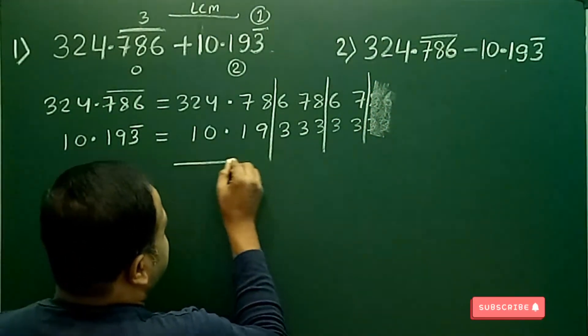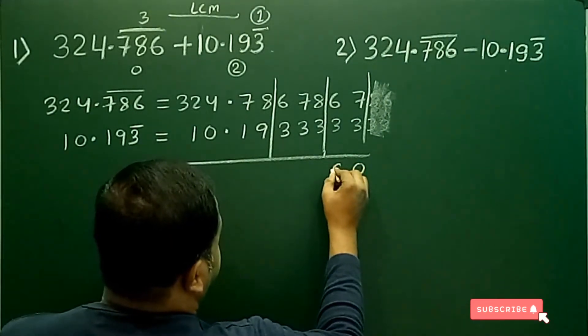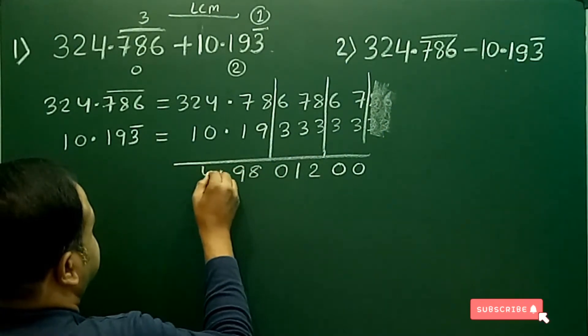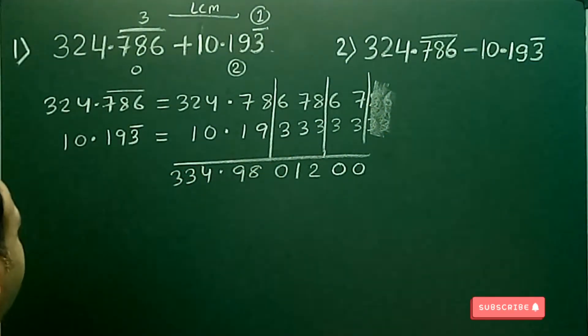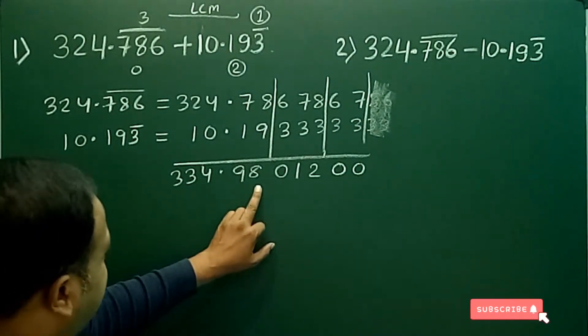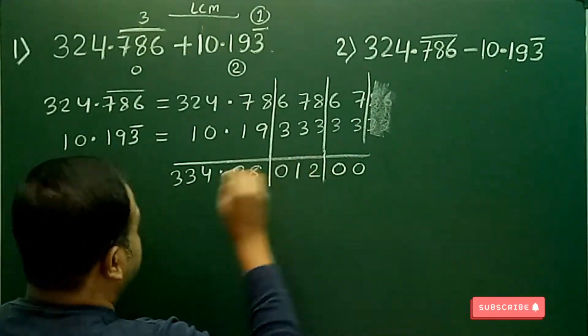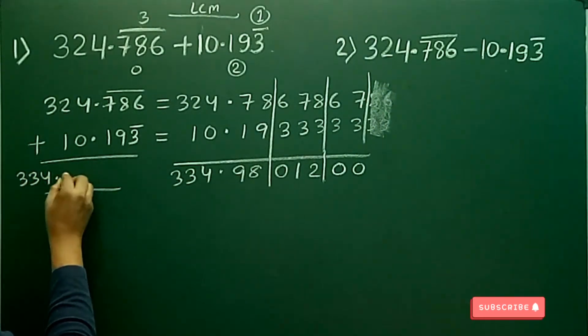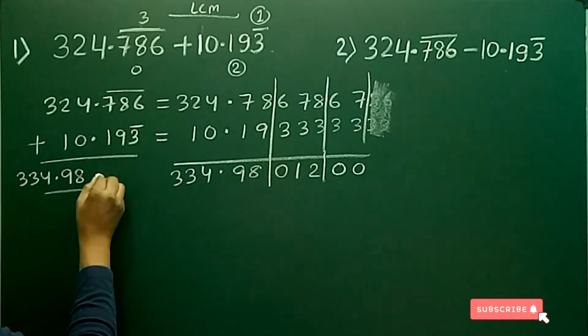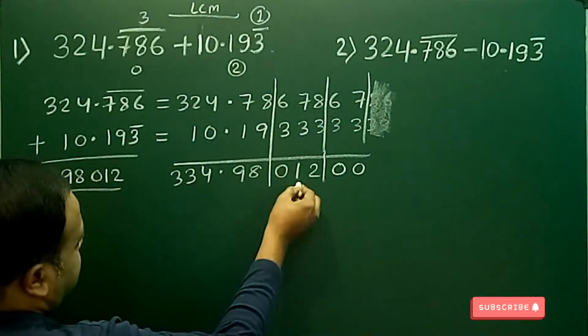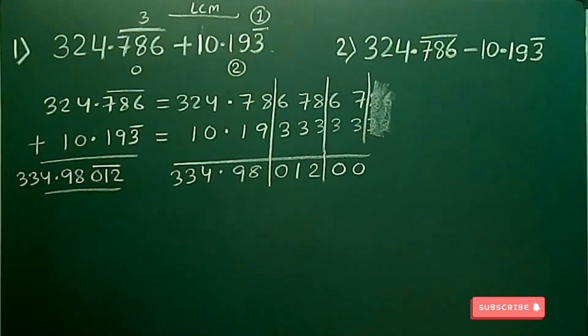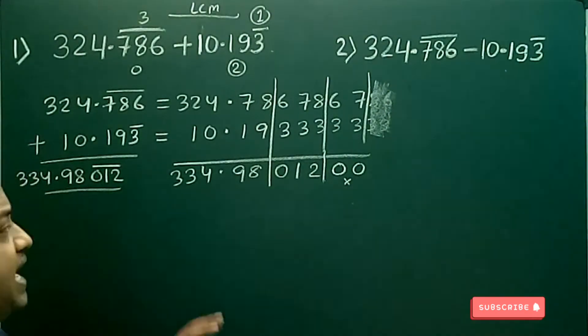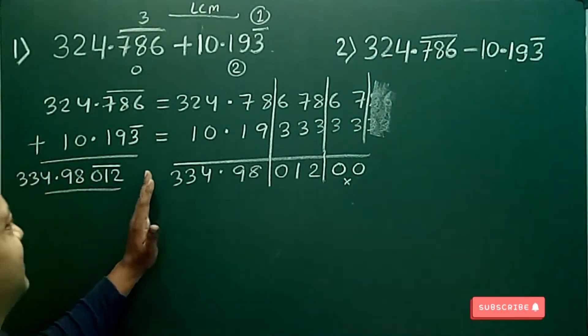Now simply I will take the sum. We get 334.9801200. Answer will be 334.98012. In the middle part the digits are 012, I will give a bar on these digits and whatever numbers are there in the last part I will not include them.